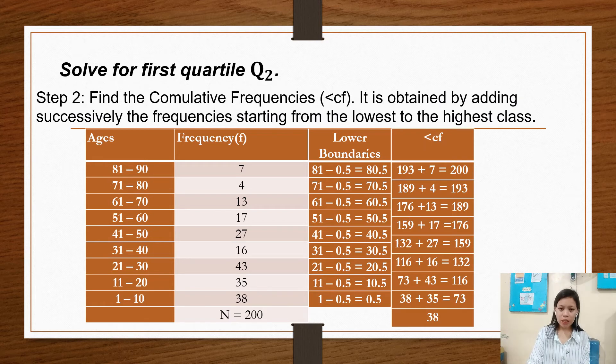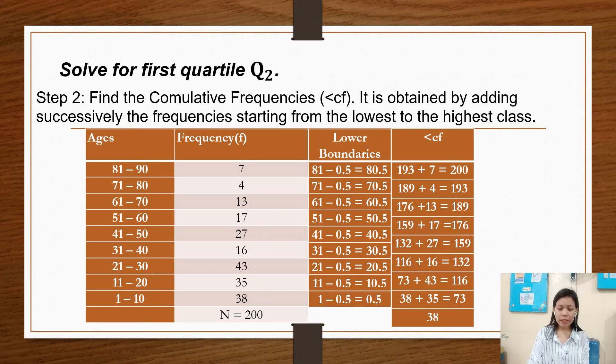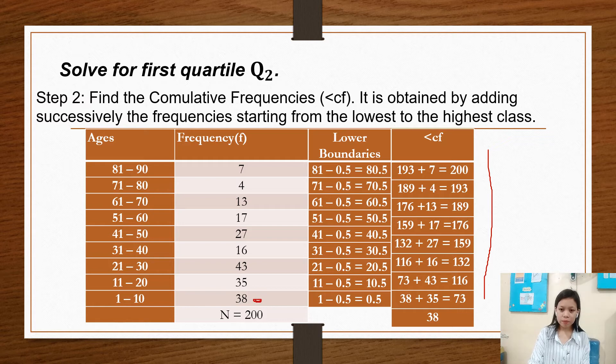In step 2, find the cumulative frequency. It is obtained by adding successively the frequencies starting from the lowest to the highest class. So we have to add from the lowest to the highest class. So 38 is our lowest frequency. We have to add 38 plus 35 equals 73.